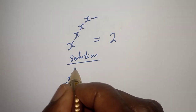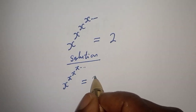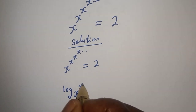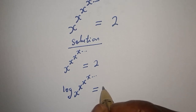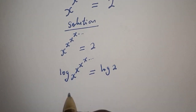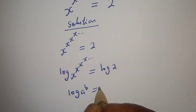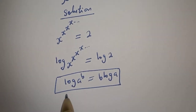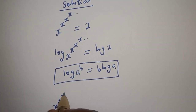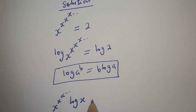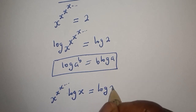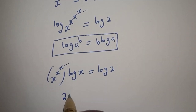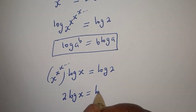s raised to power s raised to power s to infinity is equal to 2. Now let's take the log of both sides: log of s raised to power s raised to power s to infinity is equal to log 2. Using the rule log(a^b) = b·log(a), this becomes: s raised to power s to infinity times log s is equal to log 2. But that infinite tower is equal to 2, so we have 2·log(s) = log(2).